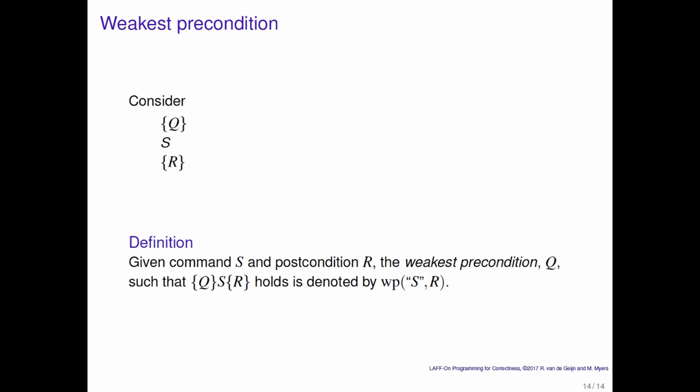Given command S and postcondition R, the weakest precondition Q such that {Q}S{R} holds is denoted by wp(S,R), the weakest precondition of S and R.